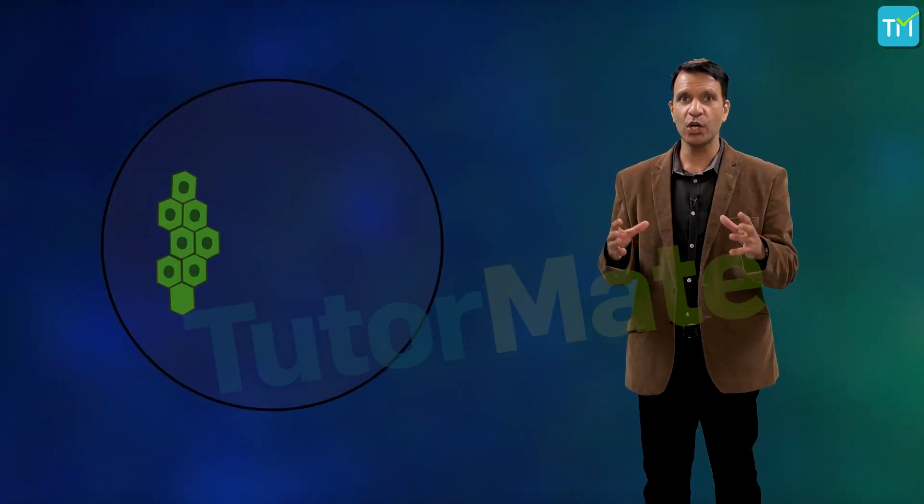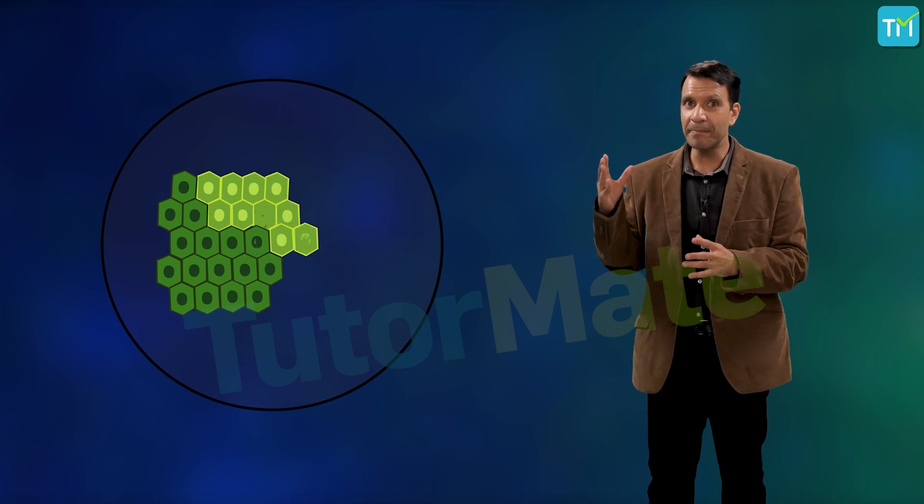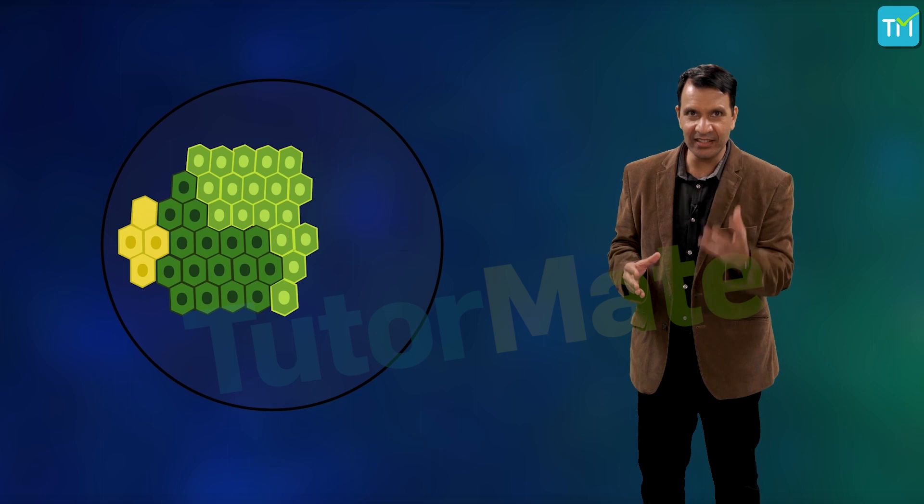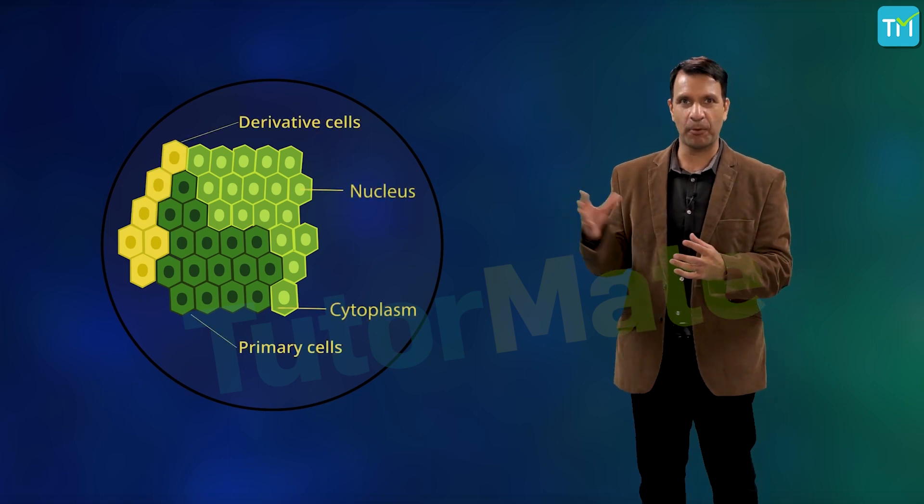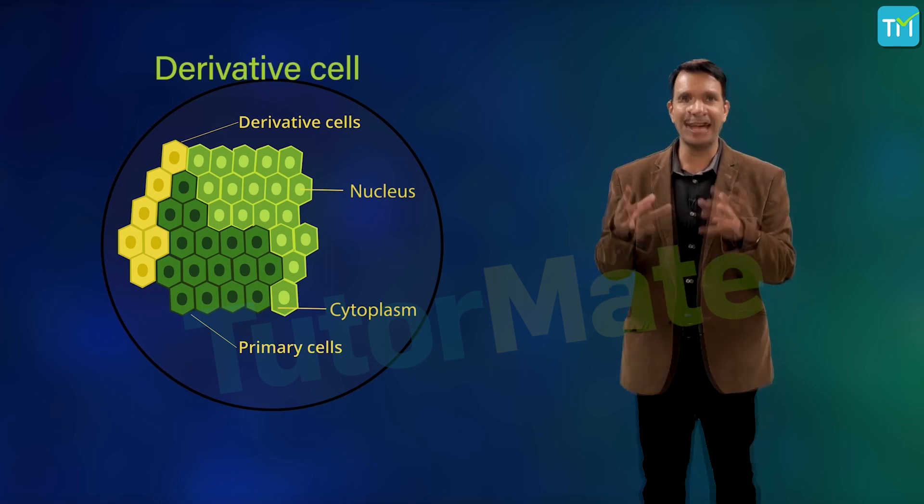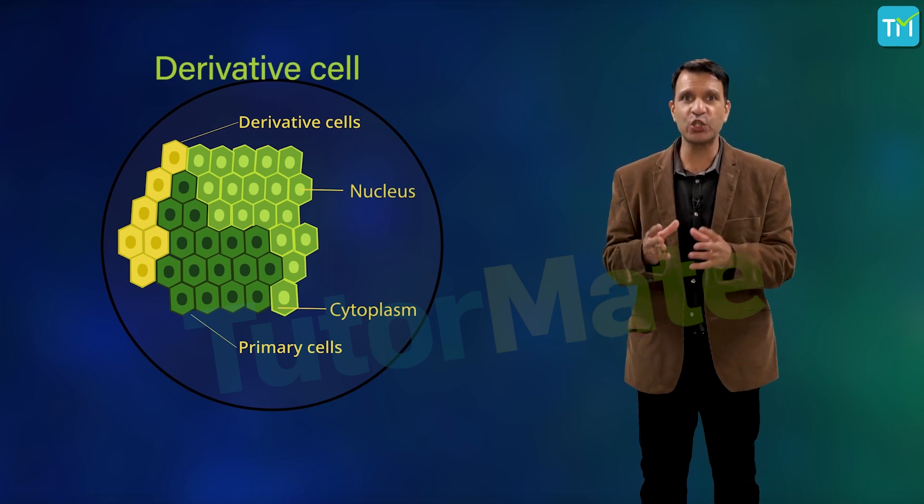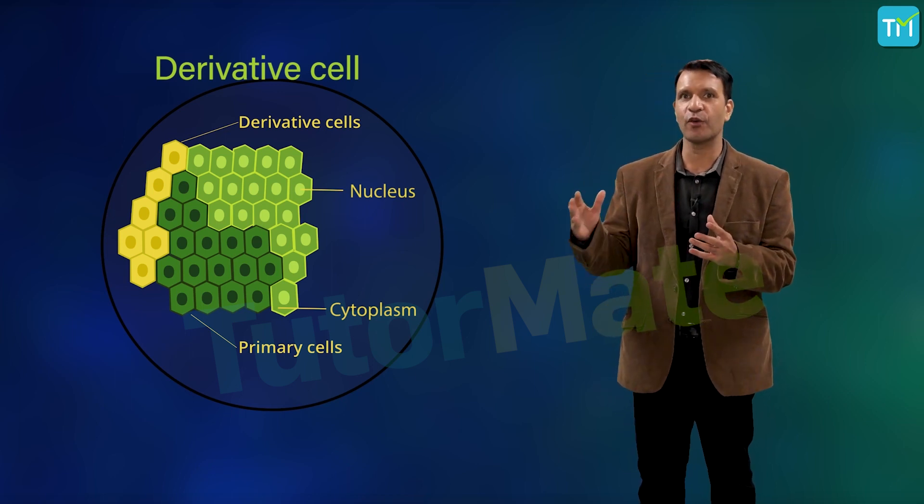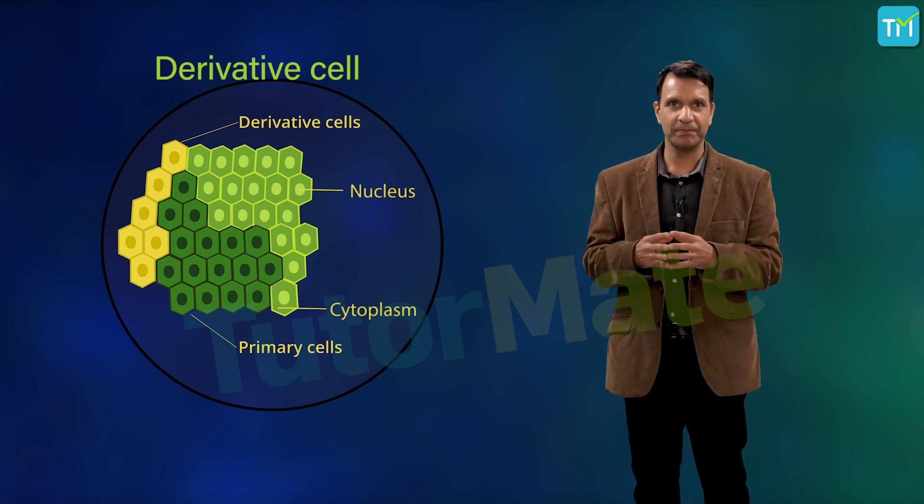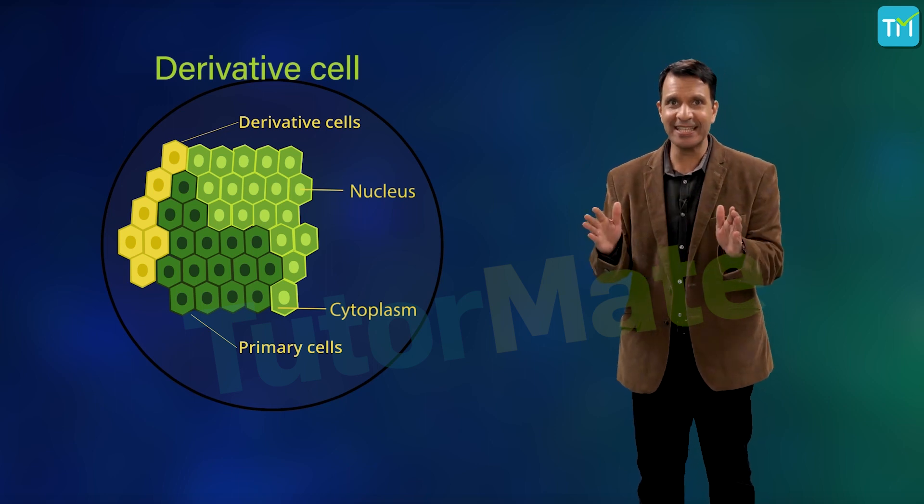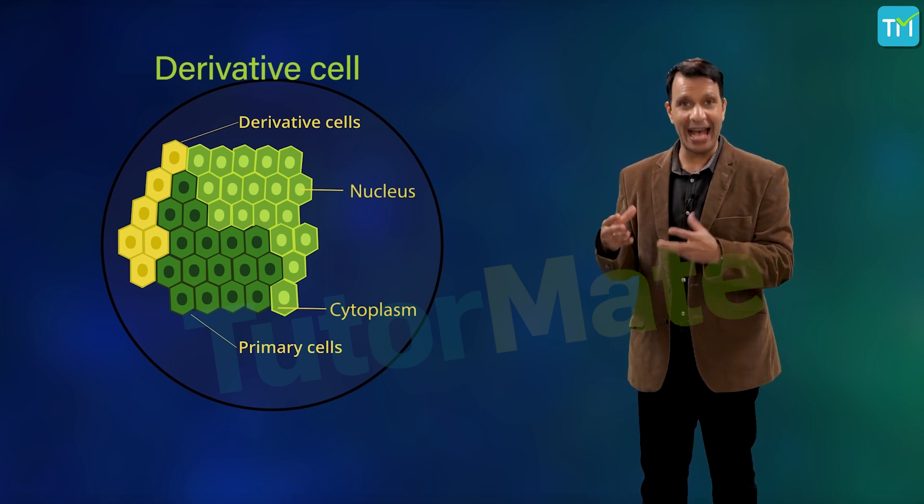When a meristematic cell divides into two, one of the two resulting daughter cells remains in the meristem as an initial cell, and the other cell is displaced into the plant body, called the derivative cell. As new cells are added by repeated division of the initial cells, the derivatives are pushed farther and farther away from the zone of active division.